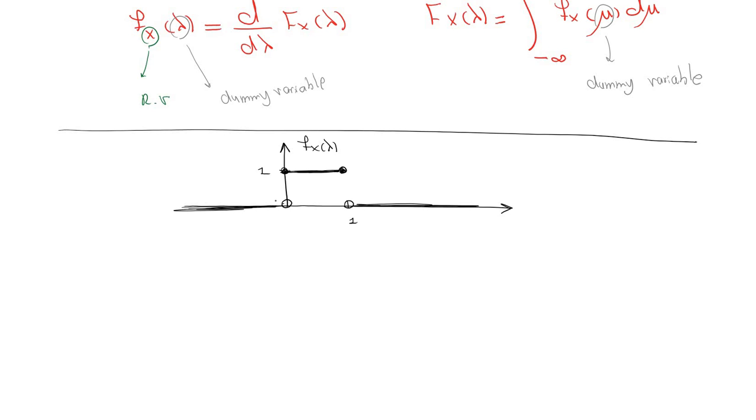So it means that f_X of lambda equals zero for lambda less than zero, equals one for lambda between zero and one, equals zero for lambda greater than one.